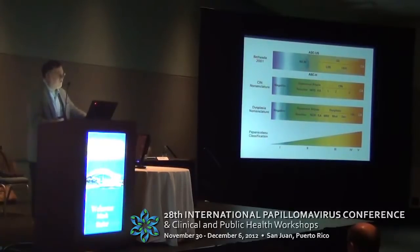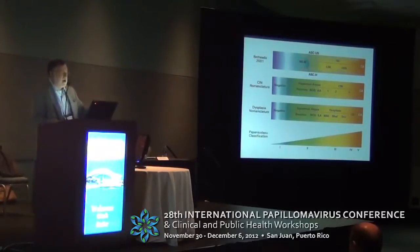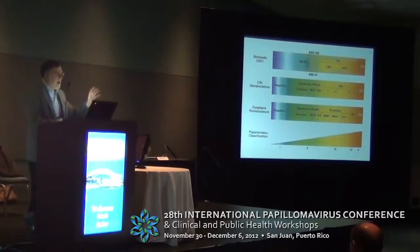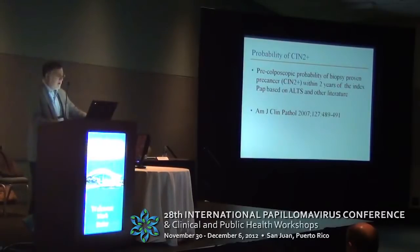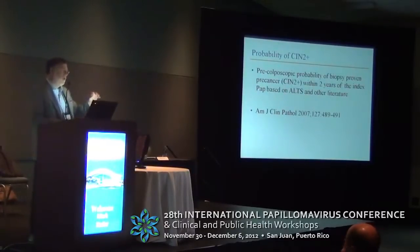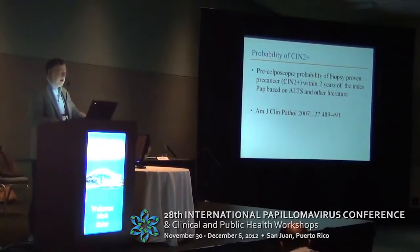Back when the Bethesda system was first described and then revised in 2001, the irregular lines in the atlas diagram were meant to show how these were not a linear or defined pattern of risk stratification — there's uncertainty in every cytologic category. But through studies such as the ALTS trial and clinical diagnostic trials done in the last 10 to 15 years, we get very good estimates of risk. The numbers I'll show are a little different than what Mark Schiffman showed, partly because they're from a different age population.